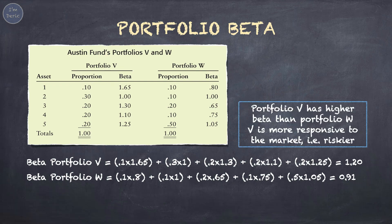Portfolio V has a higher beta than portfolio W, which means portfolio V is more responsive to the market — which means it is riskier.